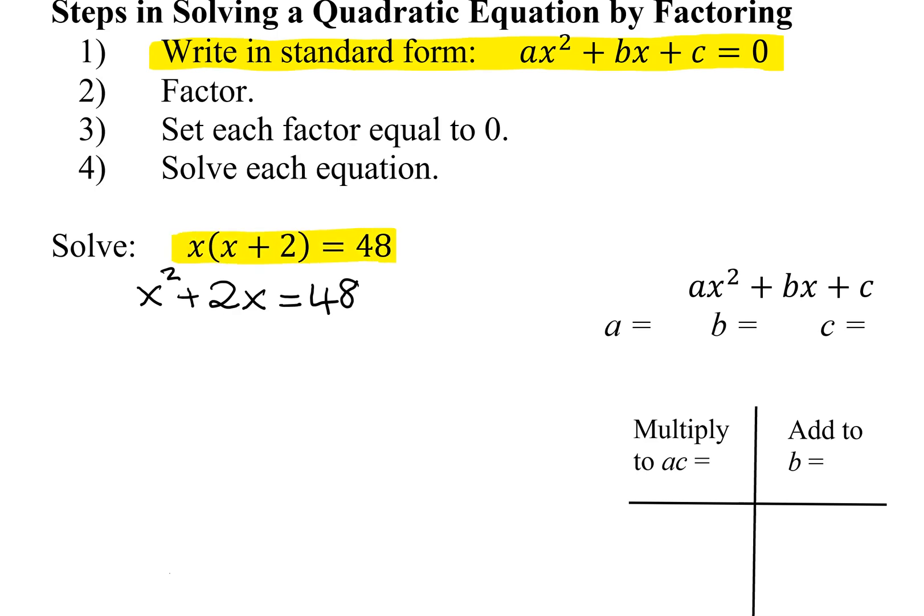Here's our original equation. This is what we obtained when we distributed the x in. Is this in standard form? Standard form means I must have 0 on one side. Do I have 0 on one side? No. So the first thing I'm going to have to do is subtract 48 from both sides.